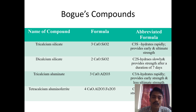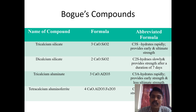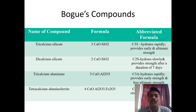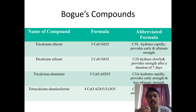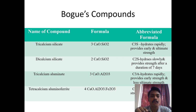Each and every chemical component has its own physical and chemical properties. So when you mix water, it will behave in a different way — different chemical components produce different reactions. Similarly, the property of cement can be changed by varying the percentage of these compounds during hydration.